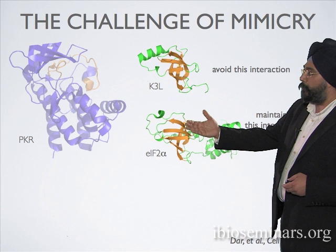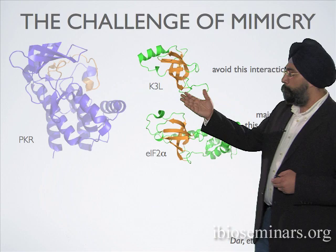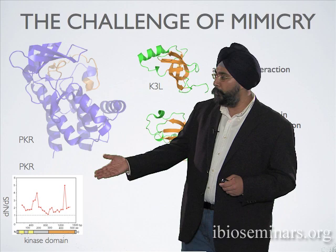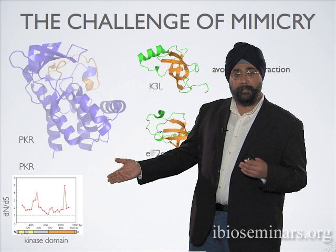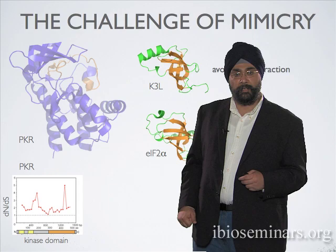To rephrase the challenge of mimicry: the PKR kinase domain needs to bind and maintain its interaction with EIF2-alpha while avoiding its interaction with the mimic, which is evolutionarily being selected to look like EIF2-alpha. In this crystal structure, the structures of the PKR interaction domain between K3L and EIF2-alpha are almost completely super-alignable. One strategy PKR is using is very rapid evolution, as shown by the sliding window DnDs plot over the entire PKR protein.